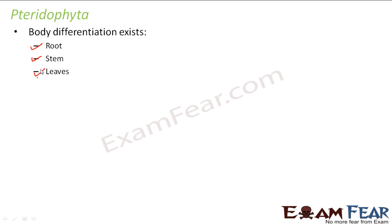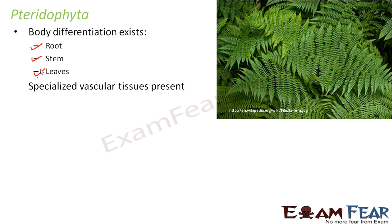The vascular tissues are xylem and phloem, which help in conduction of water and minerals throughout the plant body. So when we say specialized vascular tissues are present, we are referring to xylem and phloem. We have spoken about xylem and phloem in detail in class 9th.